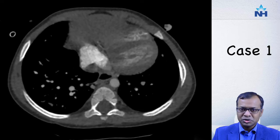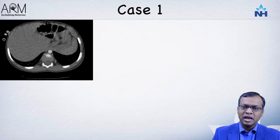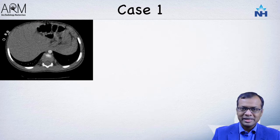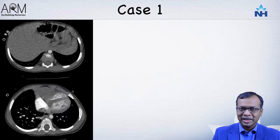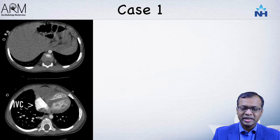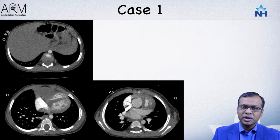The first thing I would do in assessment of congenital heart disease is to look at the location of the spleen and the liver. In this scan, this is the liver and this is the spleen, making it visceral situs solitus — normal visceral situs. Next I look at the systemic venous drainage: the SVC draining into the right atrium and the IVC also draining into the right atrium. So normal visceral situs and normal systemic venous return.